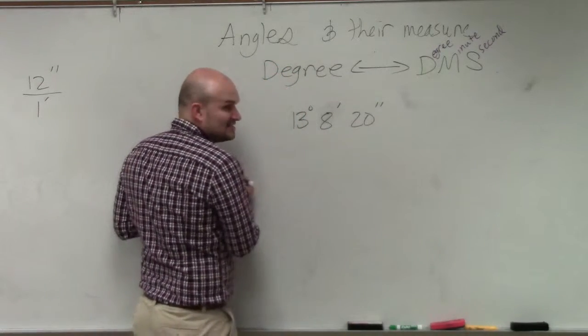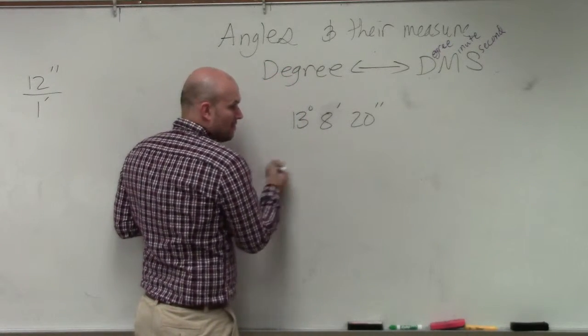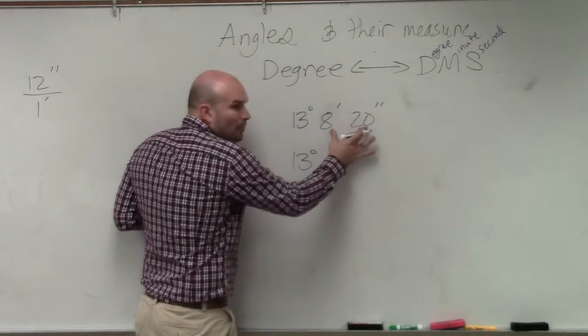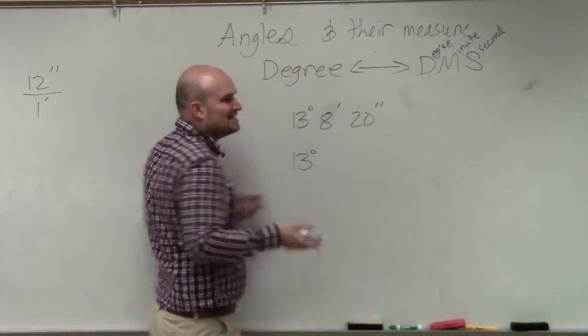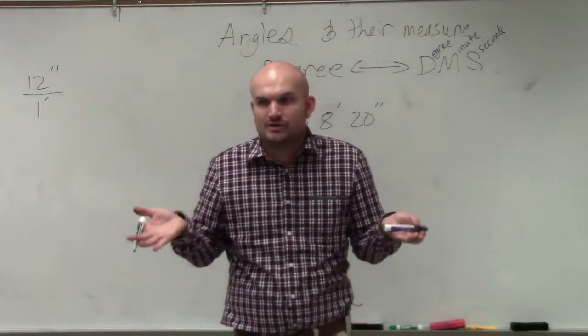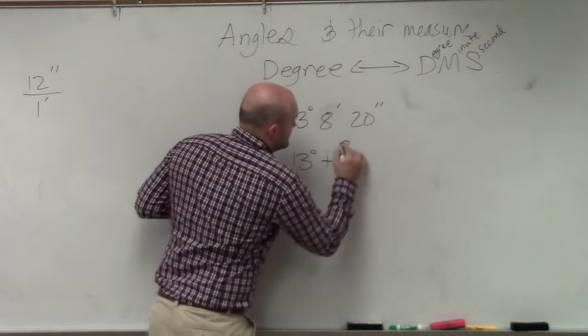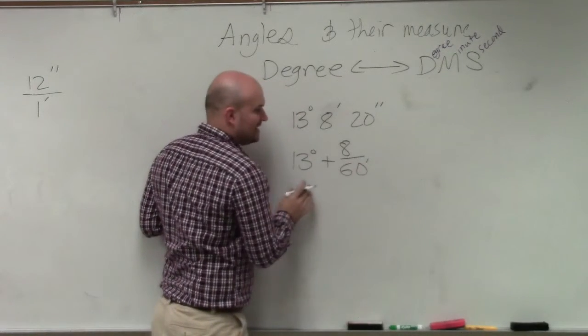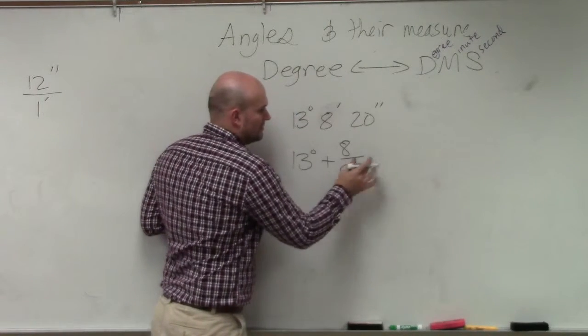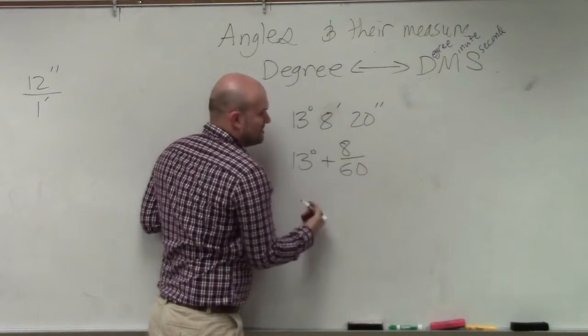In reality, how many degrees is this total? 13. These are all portions of a degree. Well, eight minutes. How many possible minutes are there in one degree? 60. So it's 8 divided by 60 minutes.